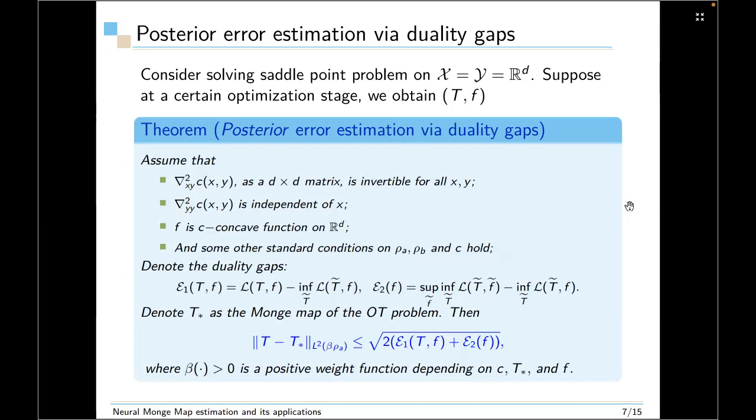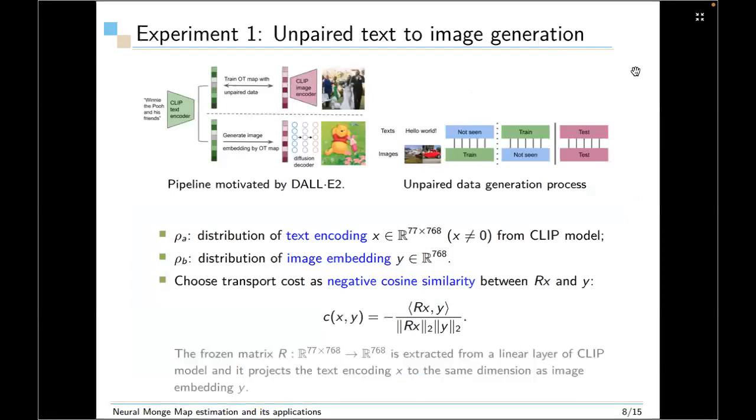Then the L2 distance between T and this ground truth Monge map T* is actually upper bounded by square root of twice E1 plus E2. And here β is a positive function depending on C, T*, and F. So we emphasize this is a posterior error estimation. So actually we don't have this supremum infimum L(T̃, F̃) in advance. So it is only posterior error estimation.